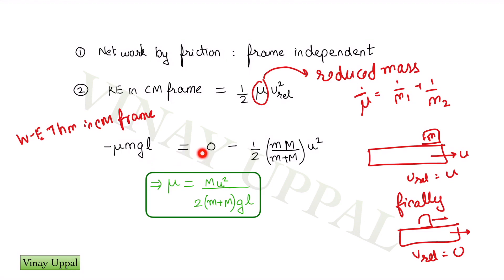And this should be equal to change in kinetic energy. Final kinetic energy in the center of mass frame is 0 because v_relative is 0. And the initial kinetic energy in the center of mass frame is half mu u_relative squared.